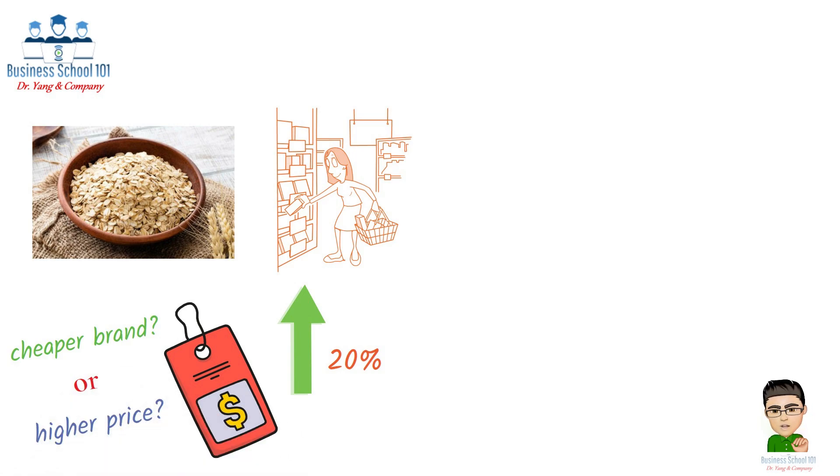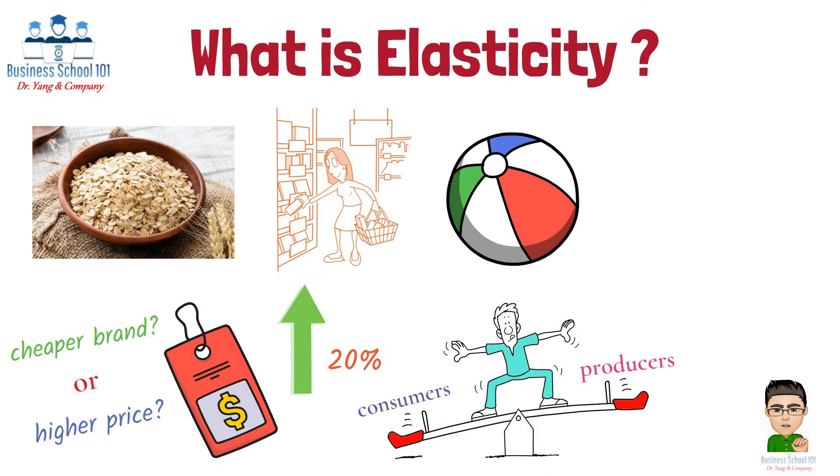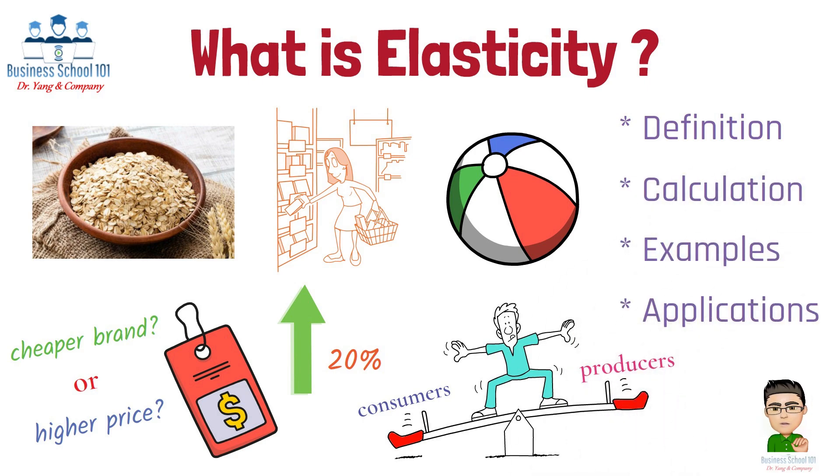Your decision hinges on a concept economists call elasticity, a measure of how responsive consumers and producers are to changes in price. But what exactly is elasticity, and how is it calculated? Are there some real world examples, and why is it such a crucial tool in understanding market dynamics? In this video, I will explore these questions with you.